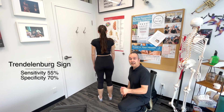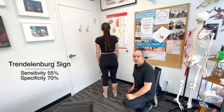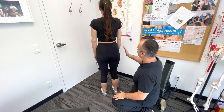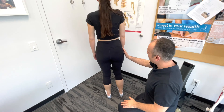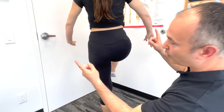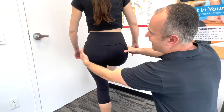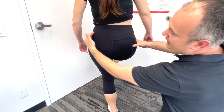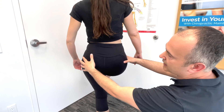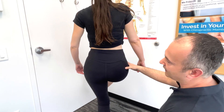Now let's look at the Trendelenburg test. This test is primarily examining the gluteus medius muscle. Start with your patient facing away from you standing, and get them to stand on one leg — hike the opposite leg up to about 90 degrees. A positive test would show that if there's a problem on the standing side, the raised side would dip down. This would be indicative of some type of gluteus medius pathology — whether it's inhibited, weakened, or if there's a muscle tear.